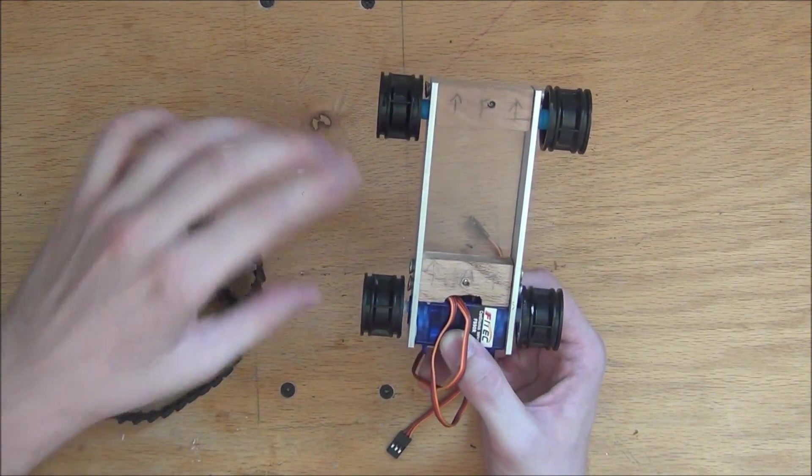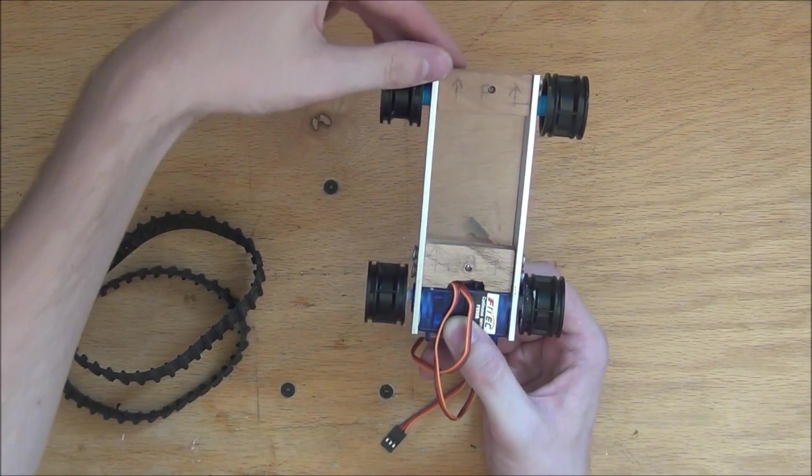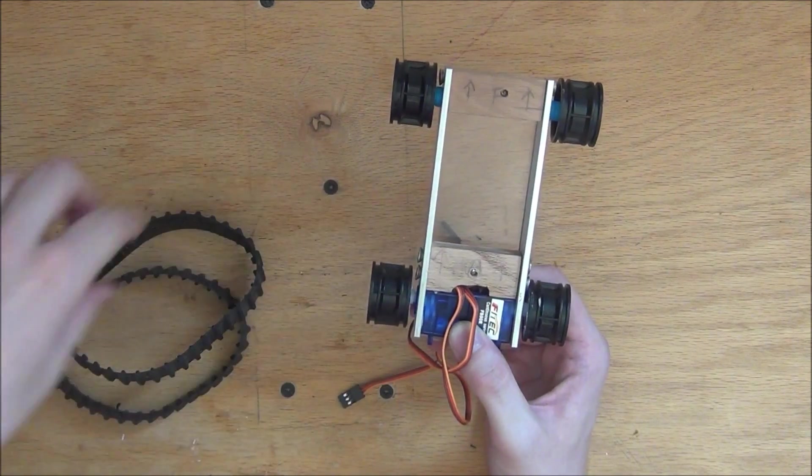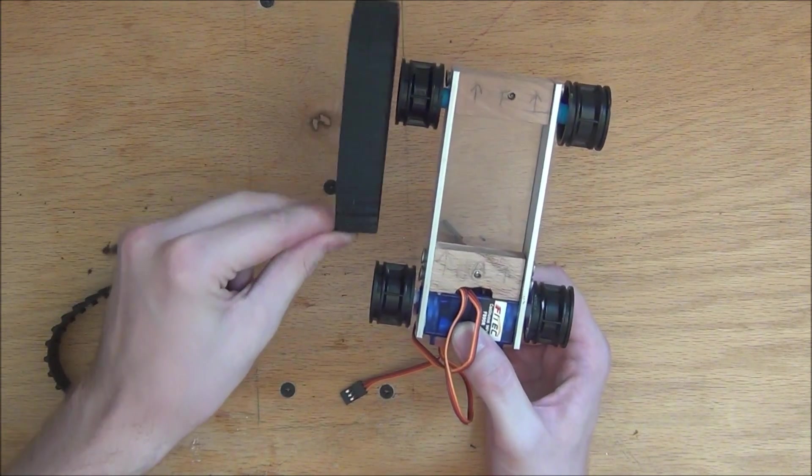So we'll check this over one more time and make sure that both sides line up well. And they do. And make sure the front ones rotate freely. And if they do, which this one does, we can then move on to the next step and put on the tank treads.